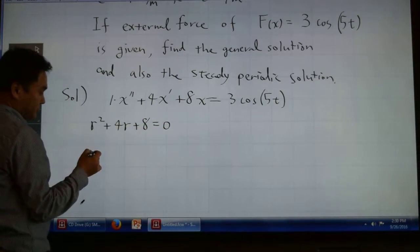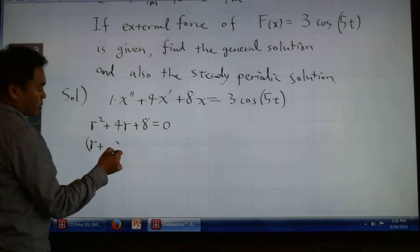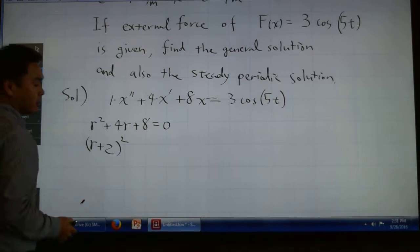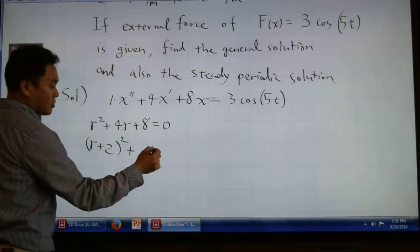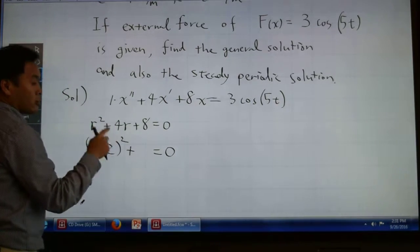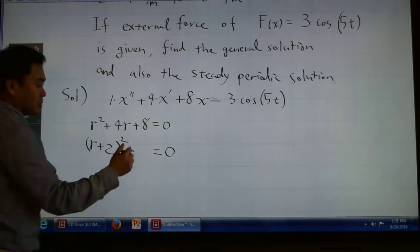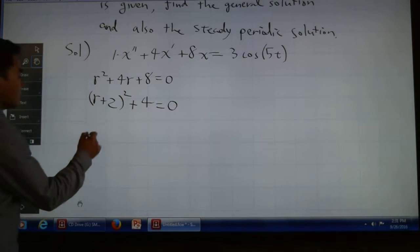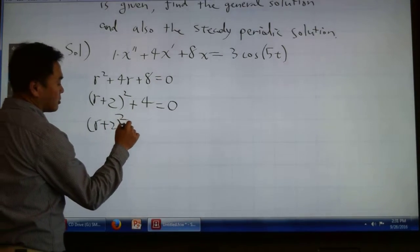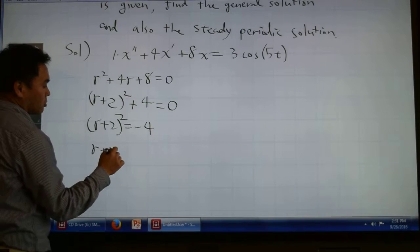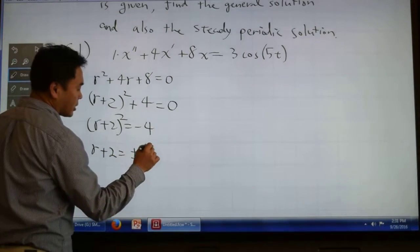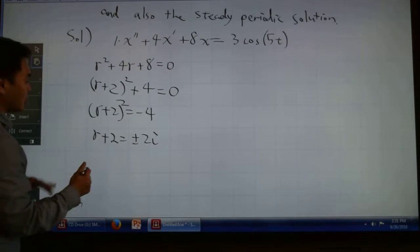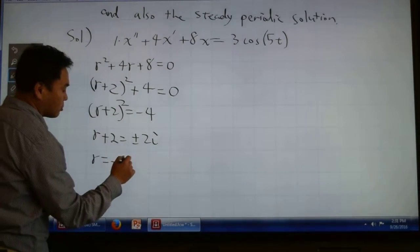Let's complete the square. What goes in here? 2, because it's half of 4. (r+2)² - 4 + 8 = 0, so (r+2)² = -4. Therefore r + 2 = ±2i, and r = -2 ± 2i.